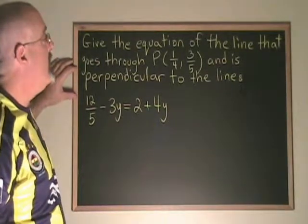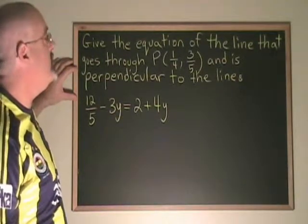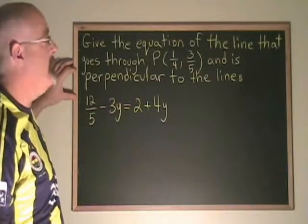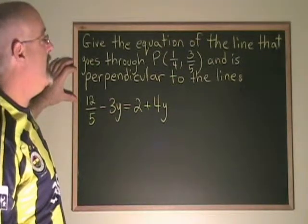In this question, we need the equation of the line that goes through the point 1 quarter, 3 fifths and is perpendicular to this line.